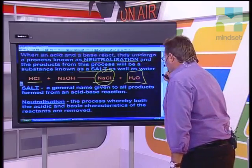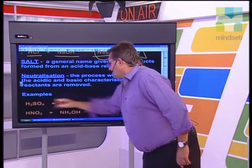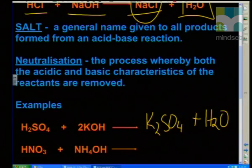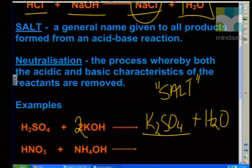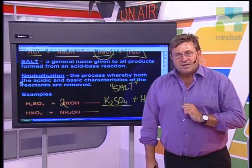We must have a look at other reactions. For example, sulfuric acid plus potassium hydroxide is going to produce potassium sulfate plus water. We need a coefficient of two to balance it out. Now, what is potassium sulfate? Well, that's also a salt, because it's a product of an acid-base reaction.